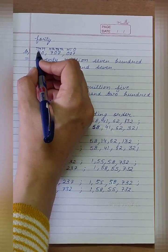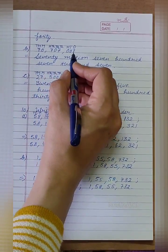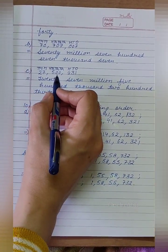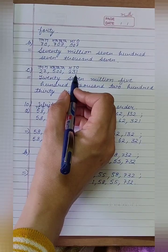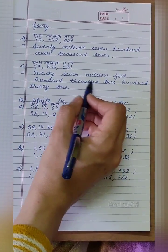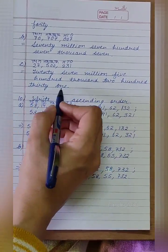So its number name will be seventy million seven hundred seven thousand seven. Part C is 27500231. Its number name will be twenty-seven million five hundred thousand two hundred thirty-one.